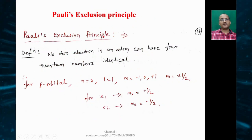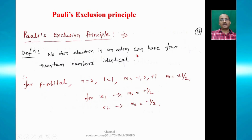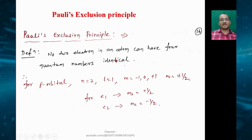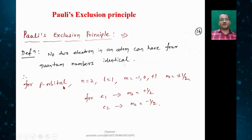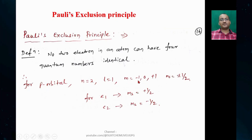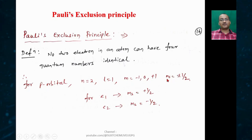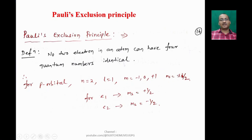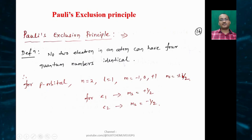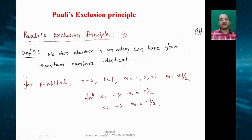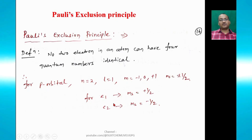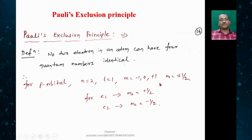Pauli's exclusion principle states: no two electrons in an atom can have all four quantum numbers identical. That means the fourth quantum number will obviously be different. For example, for a p orbital with n=2 and l=1, the m values are −1, 0, and +1, and the spin quantum number ms can be +½ for one electron or −½ for another, so all four quantum numbers cannot be the same for both electrons.